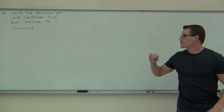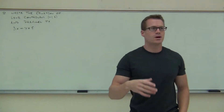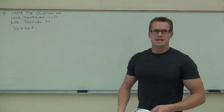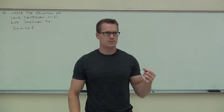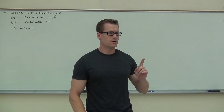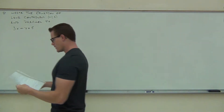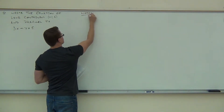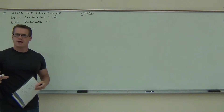So the example we're going to start with is on the board. We're going to write the equation of a line containing the point negative 1, 2, and parallel to a given equation. When we're talking about making the equation of a line, you always need two things: you definitely need the slope, and you've got to have a point. In order to write the equation of a line, you must have a point and a slope.